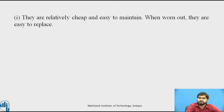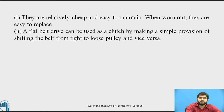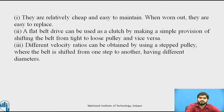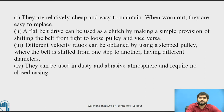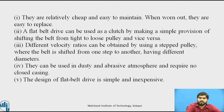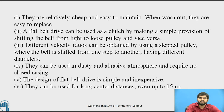Flat belts are relatively cheap and easy to maintain. When worn out, they are easy to replace. A flat belt drive can be used as a clutch by making a simple provision of shifting the belt from the tight to the loose side of the pulley and vice versa. Different velocity ratios can be obtained by using a stepped pulley where the belt is shifted from one step to another having different diameter. They can be used in dusty and abrasive atmosphere and require no closed casing, unlike gear drives where casing is required. The design of the flat belt is simple and inexpensive, and they can be used for long center distances up to 15 meters per second. The efficiency of the flat belt drive is more than the V-belt drive.